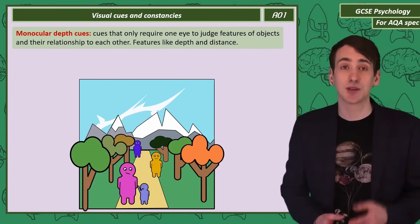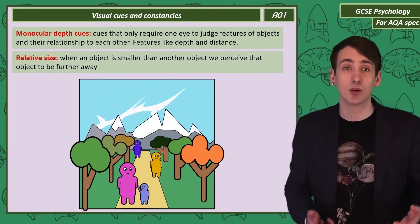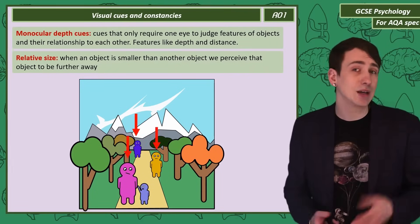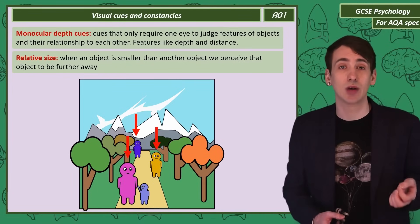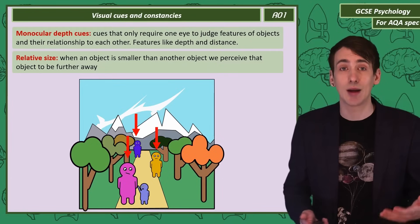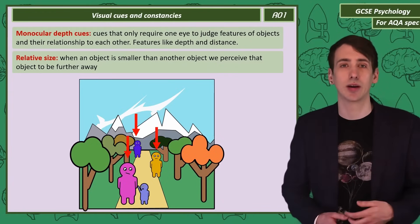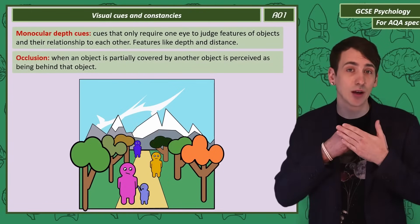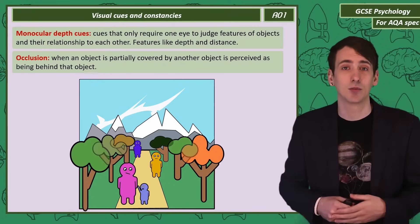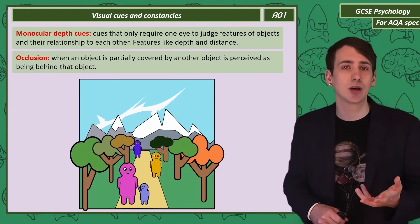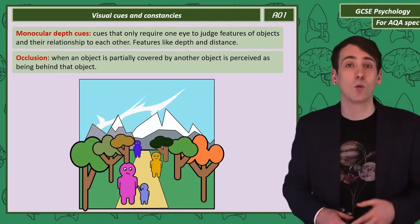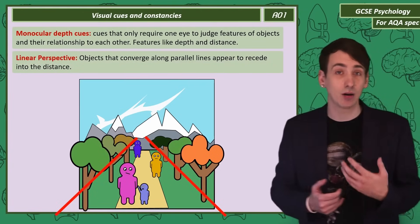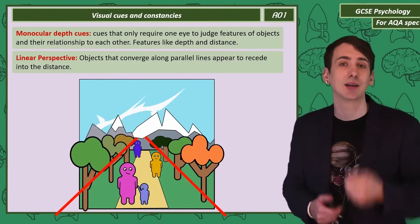Another monocular depth cue is relative size. People drawn in decreasing size give the impression that the smallest is further away. The largest tree may appear bigger than the mountain, but we use experience of objects to judge distance — we assume the mountain is much larger than the trees but further away. Another monocular depth cue is occlusion: if an object is covered by another object, we assume it's behind it. If I reverse the occlusion of the trees in this picture, the image suddenly makes much less sense. One final monocular depth cue is linear perspective: our brains assume that converging parallel lines and objects along them are receding into the distance.